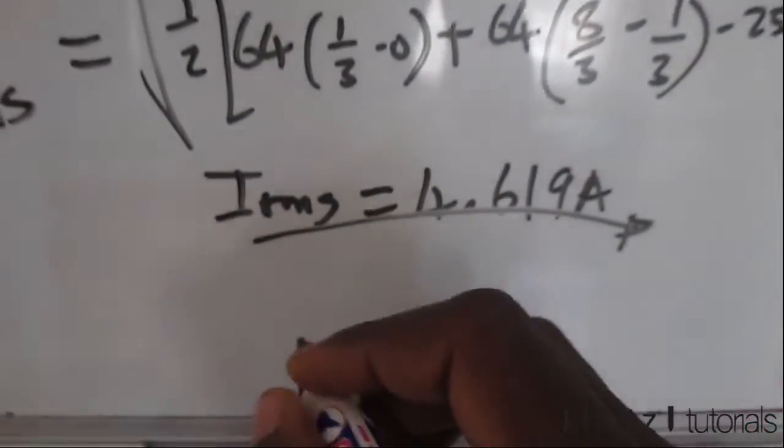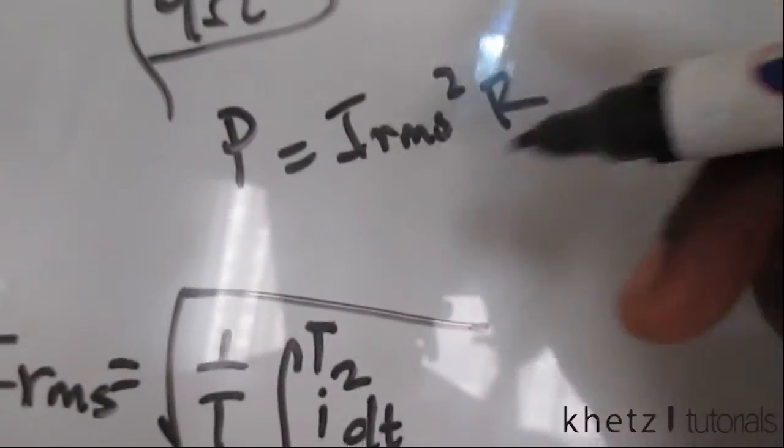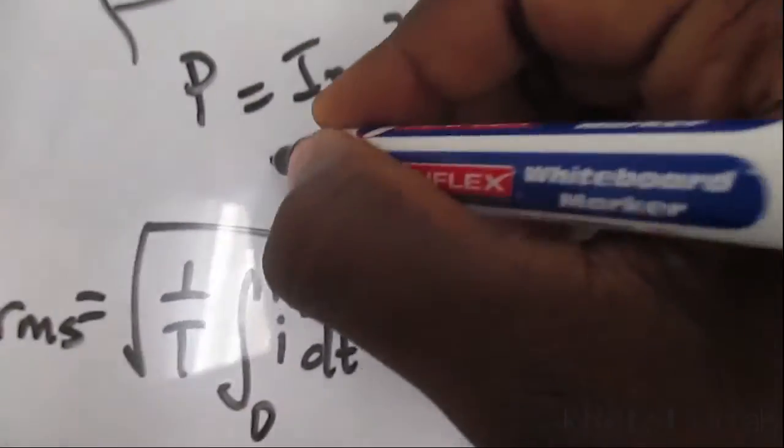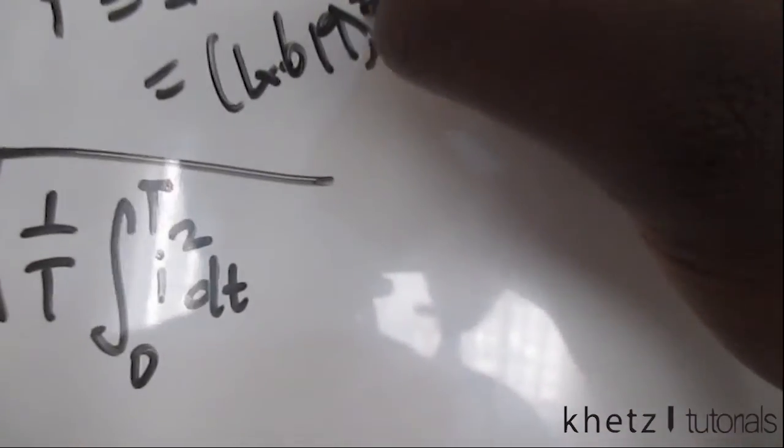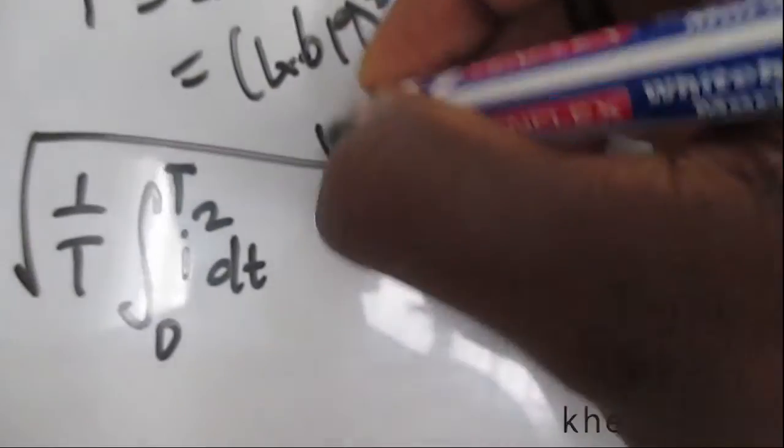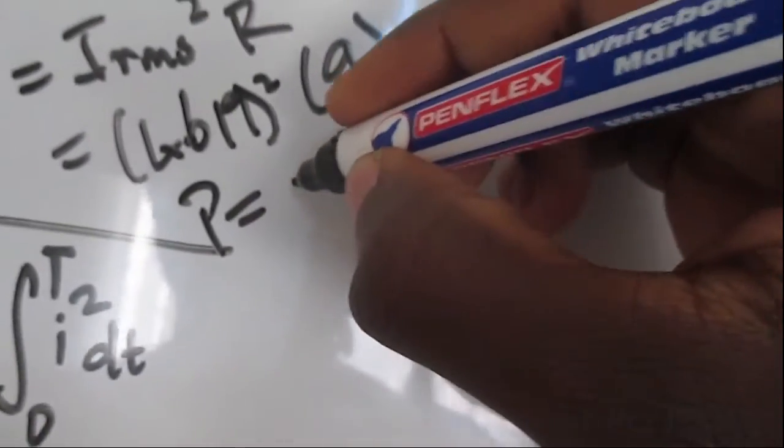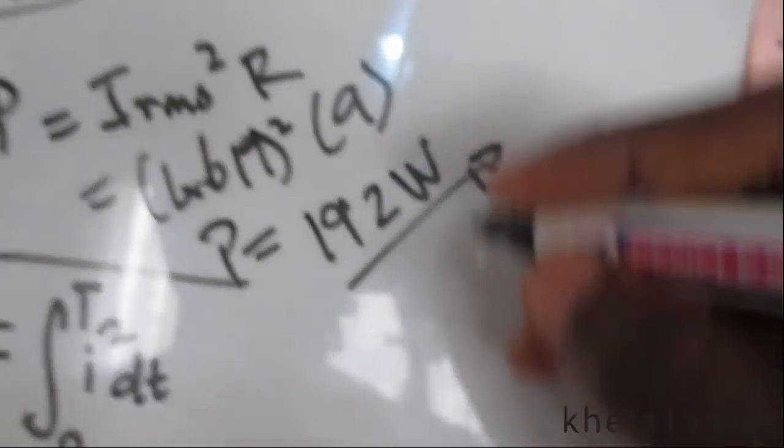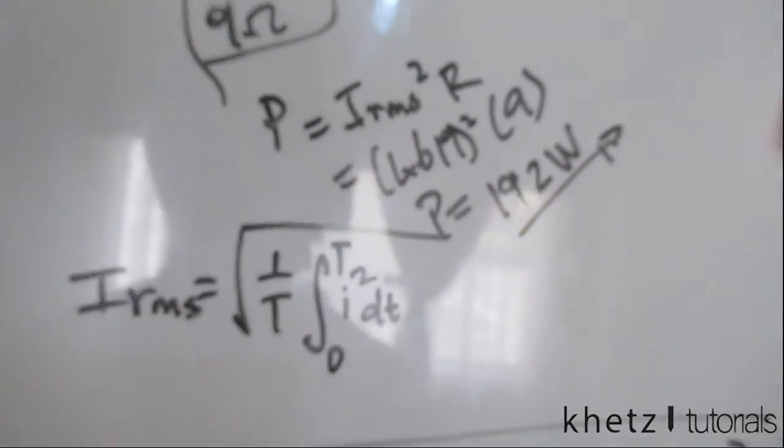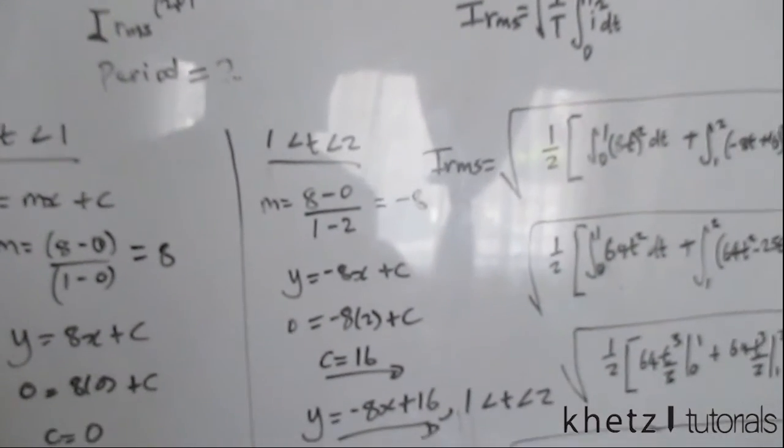We've answered the first part of the question, which is finding IRMS. After that, we're going to compute the power which is absorbed by a resistor of 9 ohms. Doing that, you're going to say this 4.619 squared multiplied by 9. The expected answer as given in the textbook is 192 watts. If you haven't subscribed to my channel, please subscribe. If you like this video, just go ahead and give it a thumbs up.